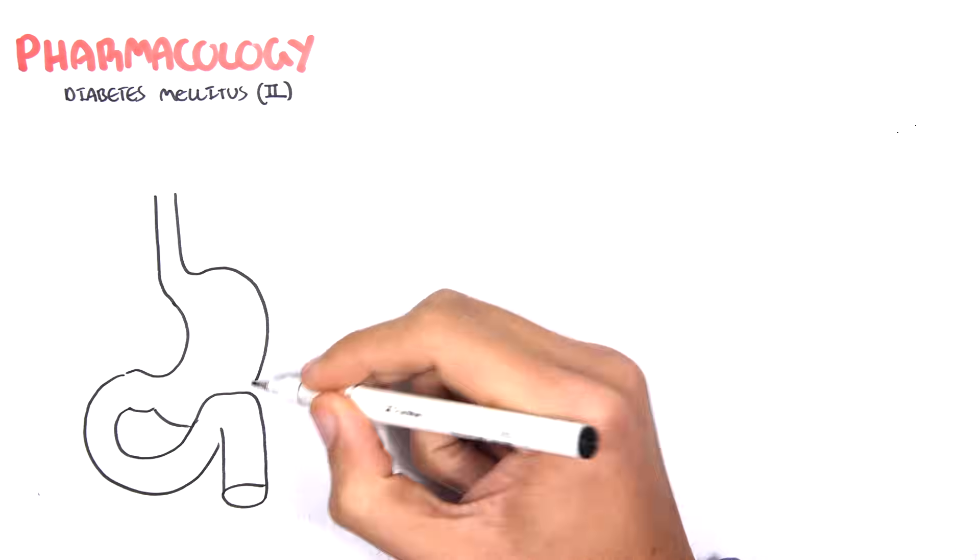So before we start I'm just going to draw a general diagram, a mind map so we can get our heads around the different drugs used in diabetes type 2. So here is the stomach, here is the bloodstream and here we have the pancreas. Now the pancreas is made up of different types of cells, one of which are these cells known as B cells and these B cells are the ones that produce the hormone insulin.